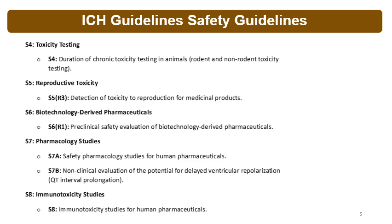S5 is for reproductive toxicity. The S5R3 guideline covers detection of toxicity to reproduction for medicinal products. S6 is for biotechnology-derived pharmaceuticals, specifically the preclinical safety evaluation of biotechnology-derived pharmaceuticals.